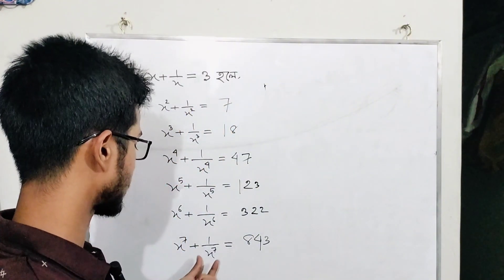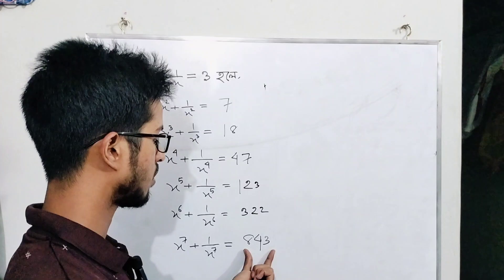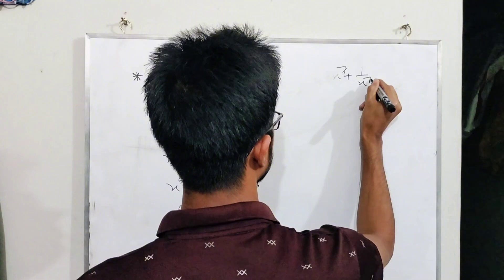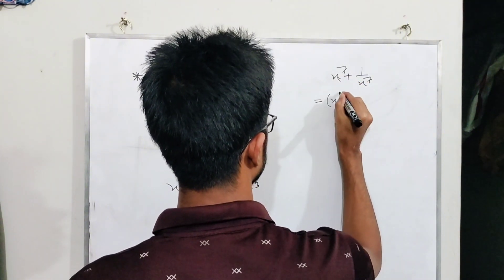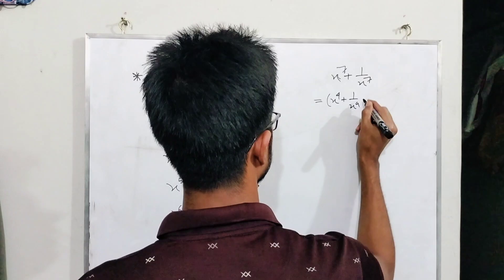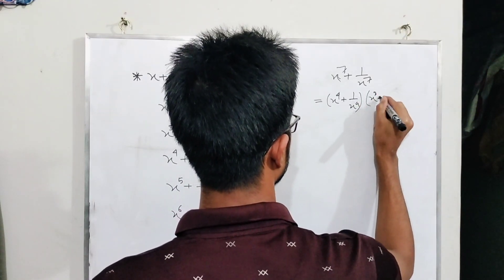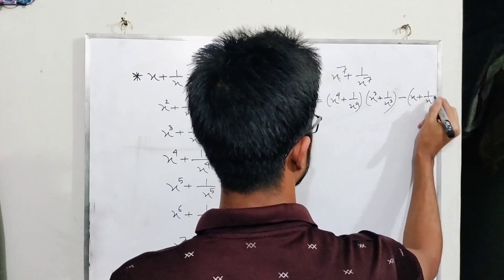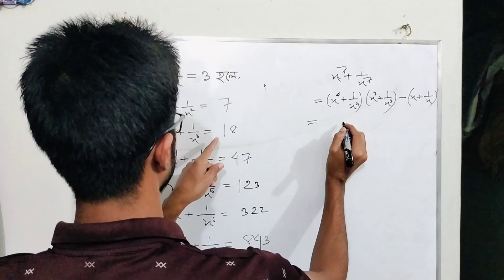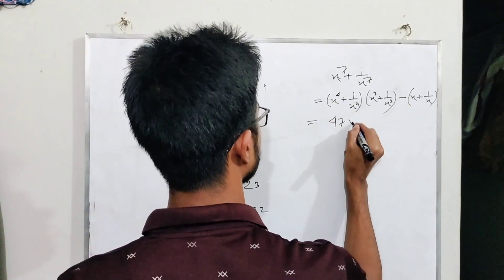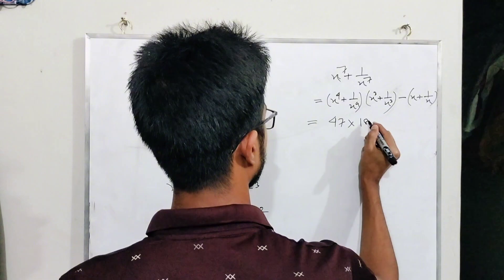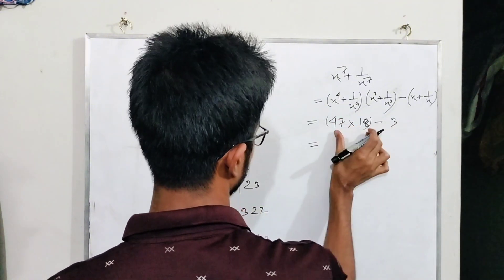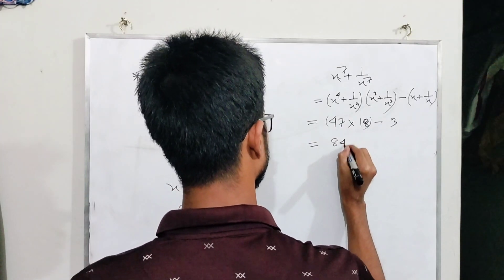For x to the power seven plus one by x to the power seven, we multiply (x to the power four plus one by x to the power four) times (x cube plus one by x cube) minus (x plus one by x).